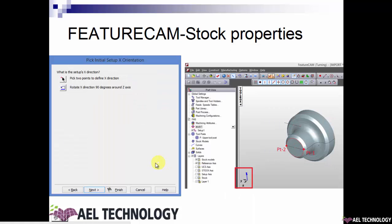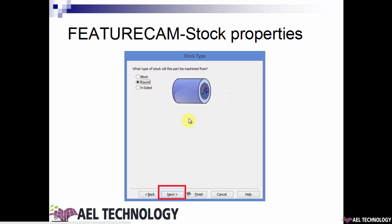It will ask you to select or orient the X axis. You can click this icon which rotates the X direction 90 degrees along the Z axis — you can see X rotating 90 degrees perpendicular to the Z axis. Or you can pick two points which define the X direction and the UCS will be aligned to it. When you click Next, FeatureCam takes you to stock type. Since this is a turning tutorial, I'm going to keep it as round and click Next.